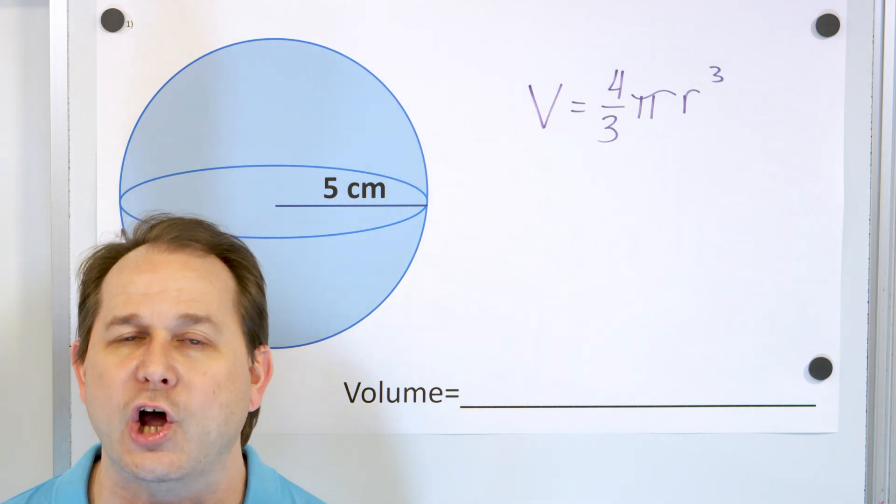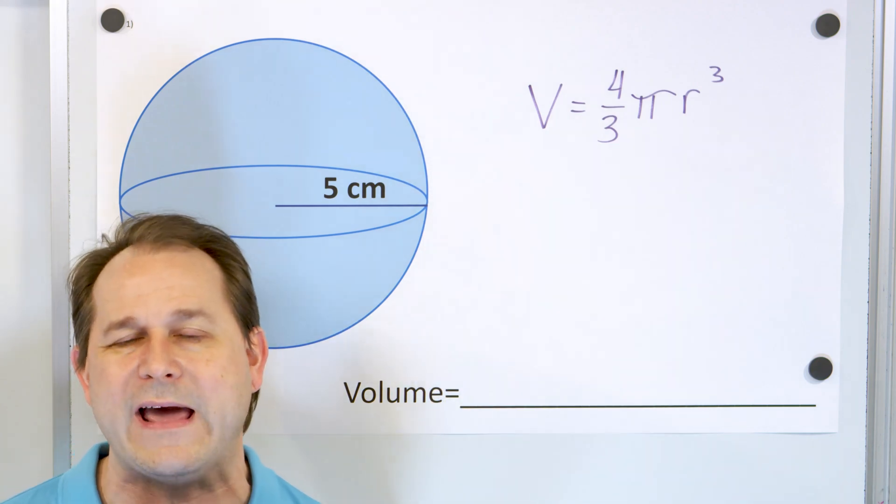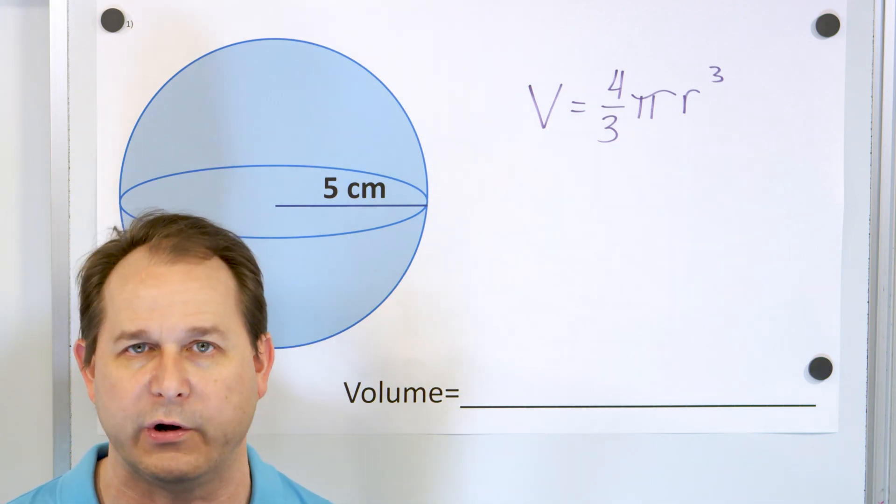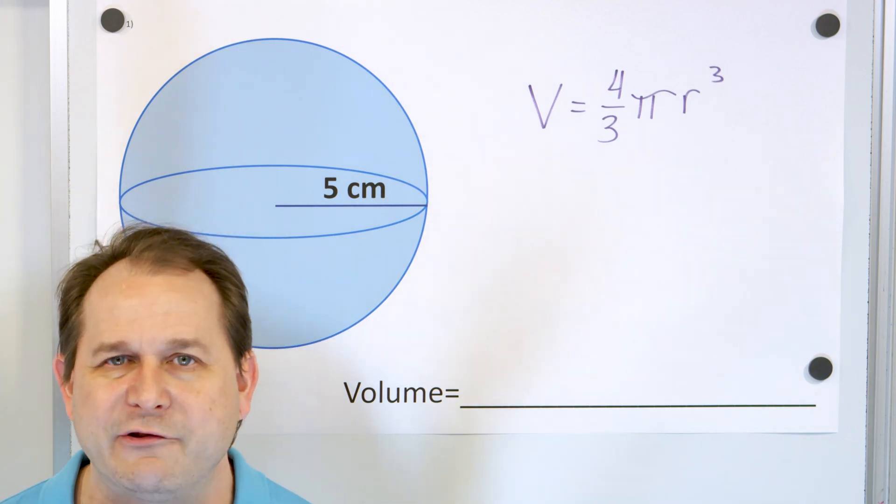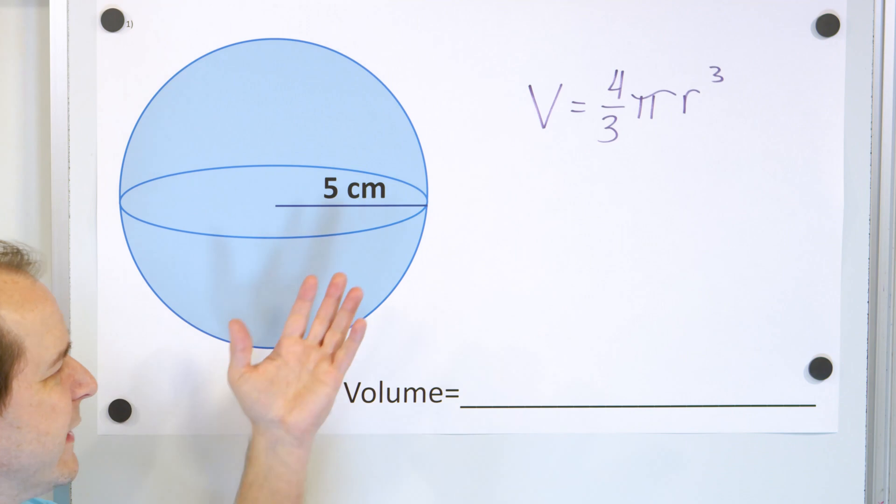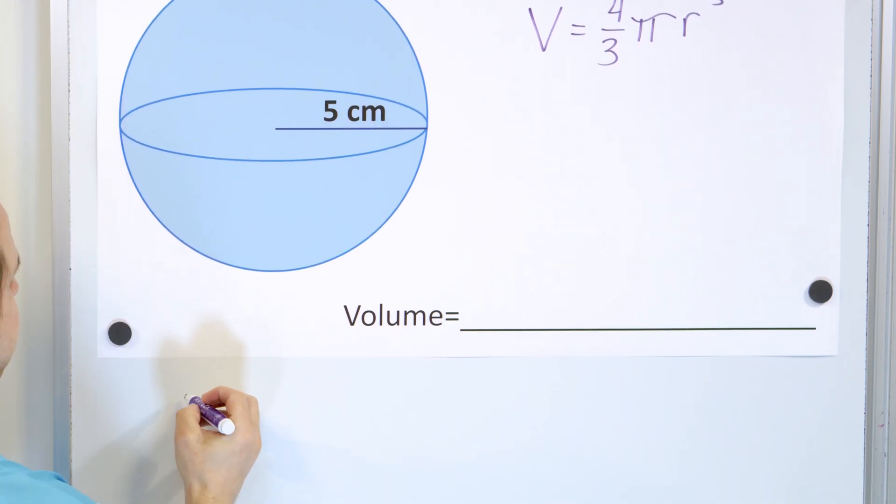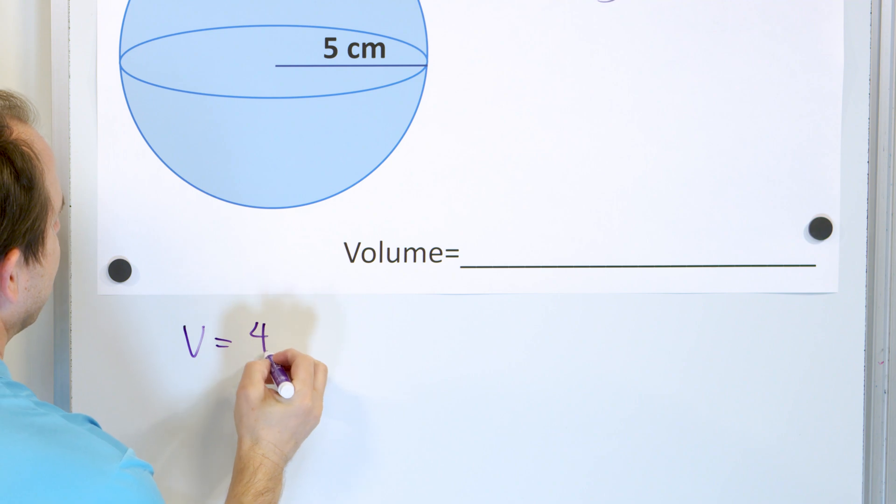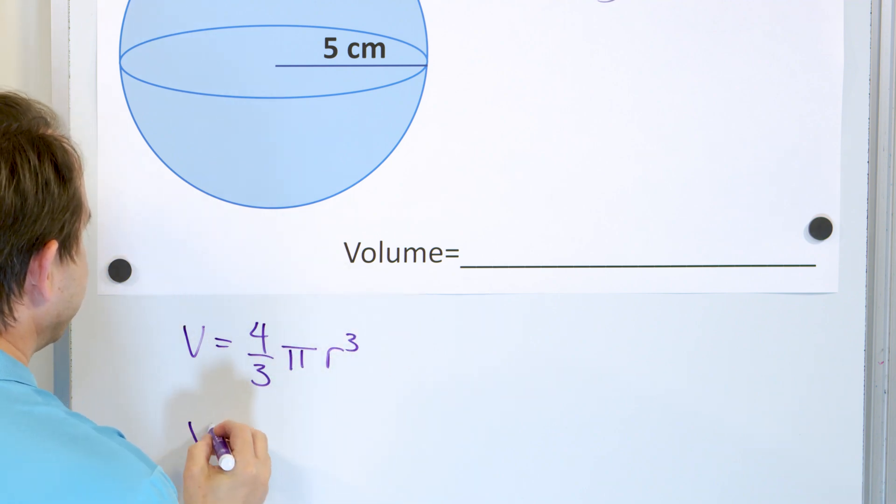But using the laws and the rules of calculus, we can actually derive this and show that what we have on the board is the correct volume for a sphere. Of course you can measure it as well. So if we want to figure out what the volume of a sphere is, in fact in this case the radius being 5 centimeters, we say the volume is 4 thirds times pi times r cubed, then we plug everything in.